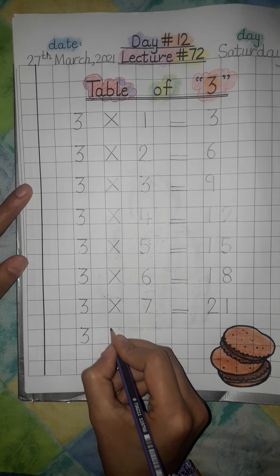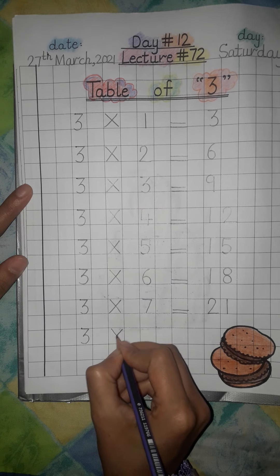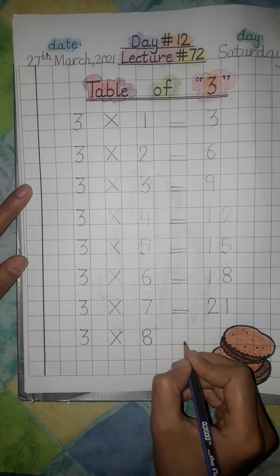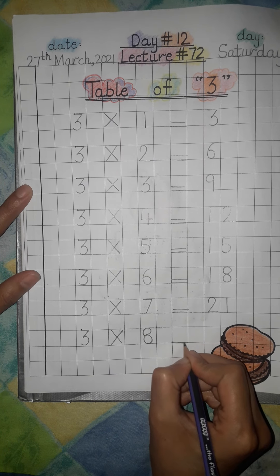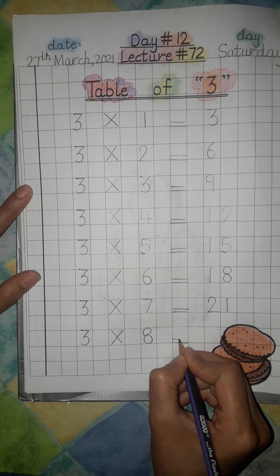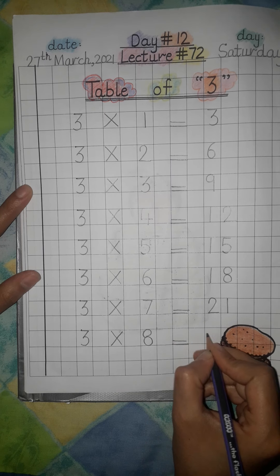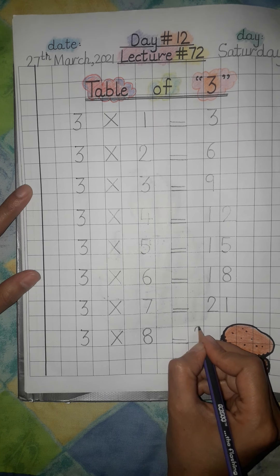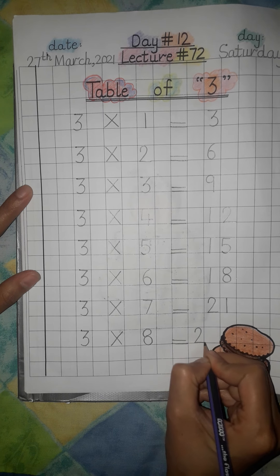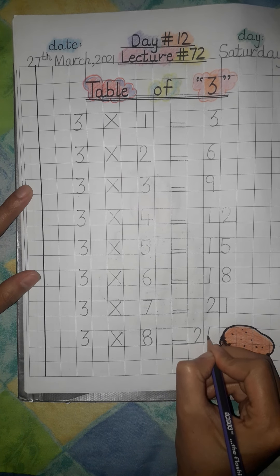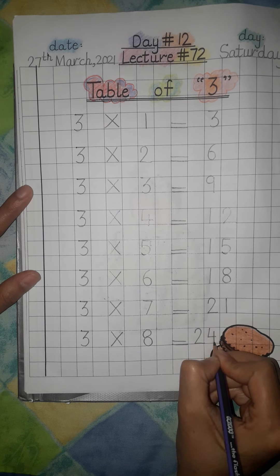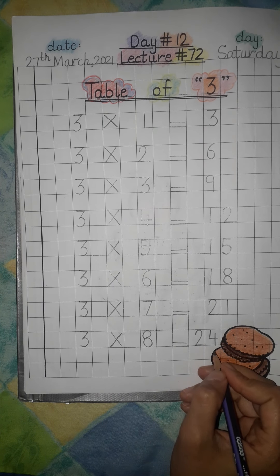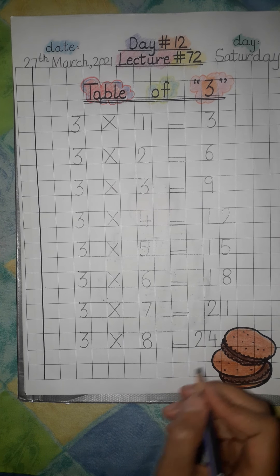Three multiply eight is equal to twenty four. Three eights are twenty four.